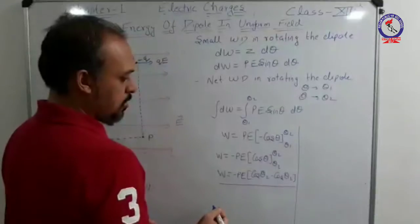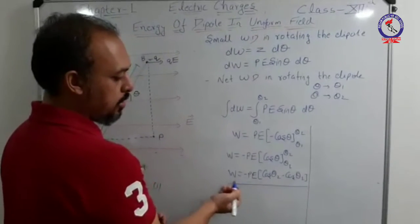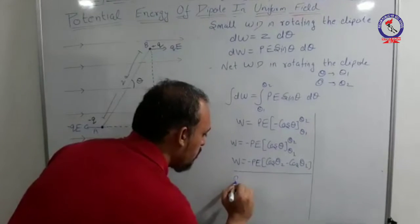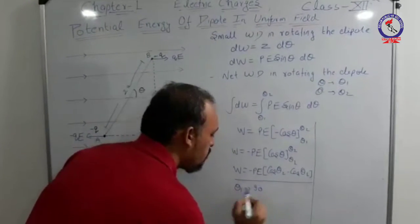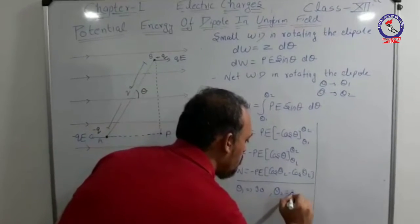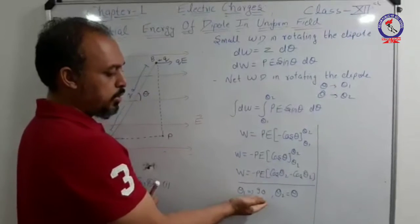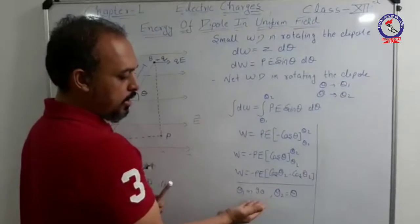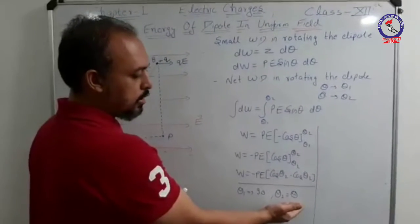Now in this expression you have calculated the magnitude of work done. Consider that θ₁ is equal to 90 degrees and θ₂ is equal to θ. This means that initially the dipole is kept perpendicular to the direction of the electric field, and the net work done has rotated the dipole to a certain angle θ.